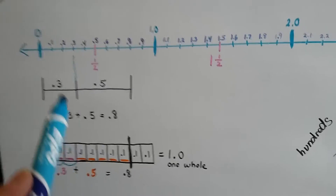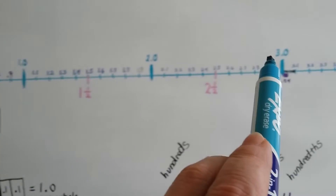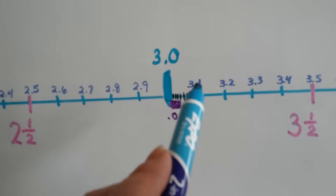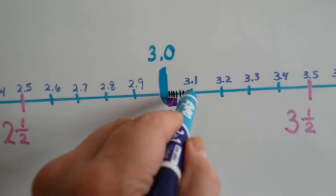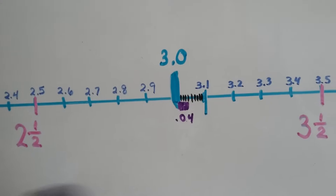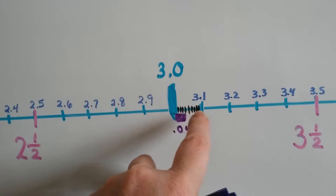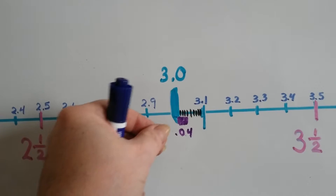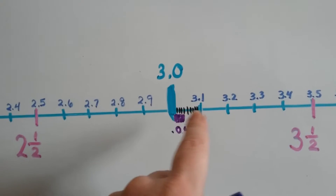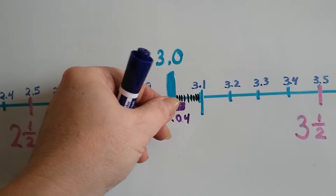Now I want you to take a look coming down this number line. Here's one whole, two whole, three whole. Looking in between here — this is three and one tenth right here. And if I break this little tenth up into ten pieces, then each of these is a hundredth.